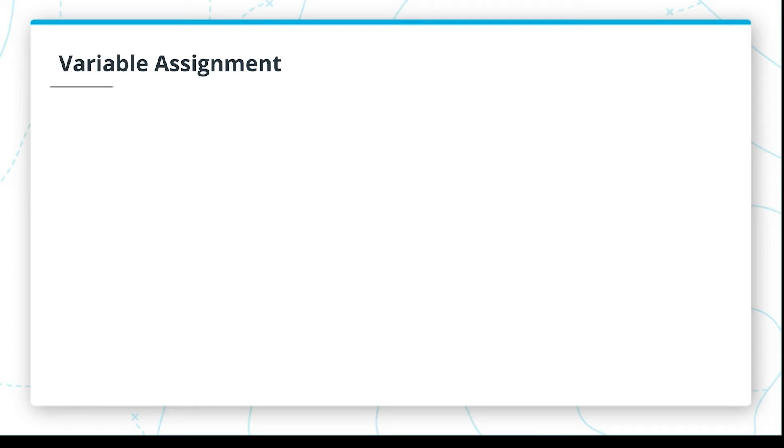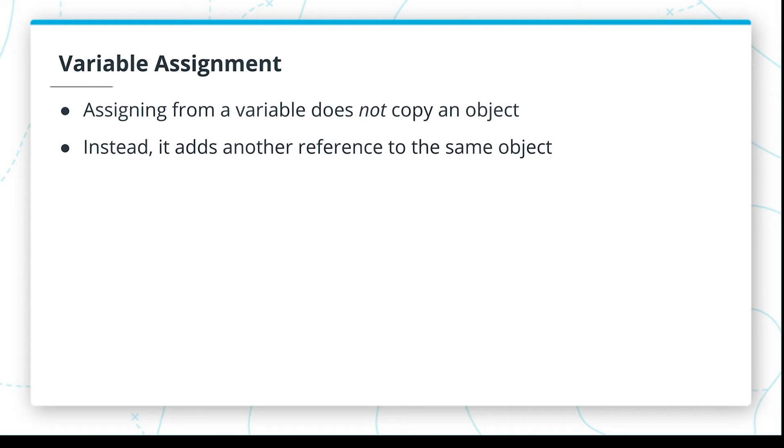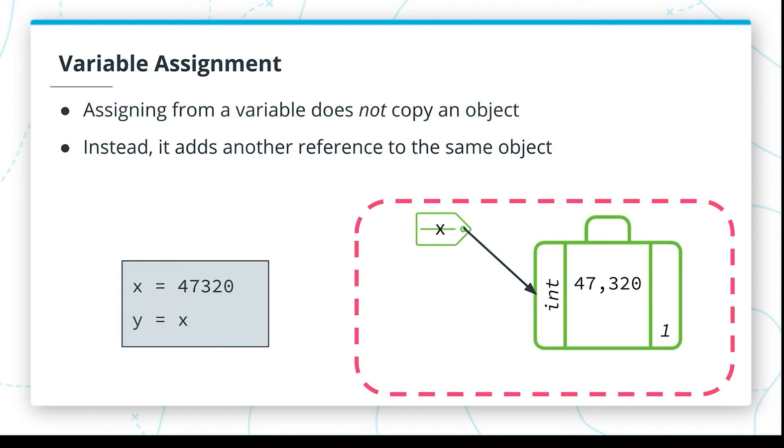Namespaces are an important key in understanding how variable assignment works as well. When you assign from a variable, you don't copy an object, but rather you add a reference to the same object. So if we have one line of code that says x equals 47,320 and another line of code that says y equals x, in this case assigning from x to y, we first understand that we live inside some namespace. And inside that namespace, we have an association between the name x and the object containing 47,320. When we assign x to the name y, all we do is add an association from the name y to the same object.